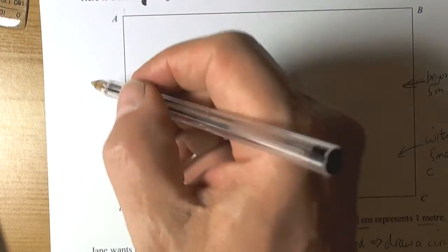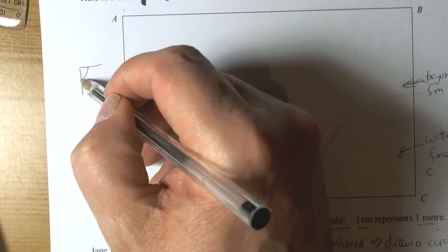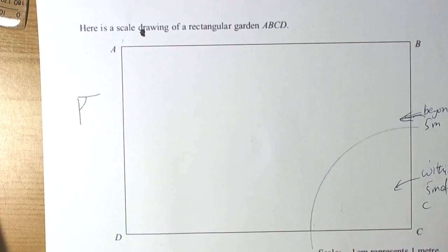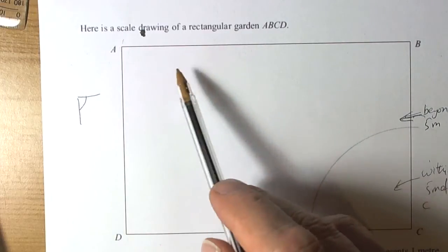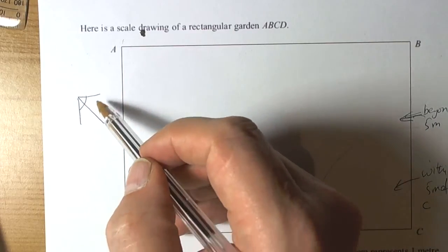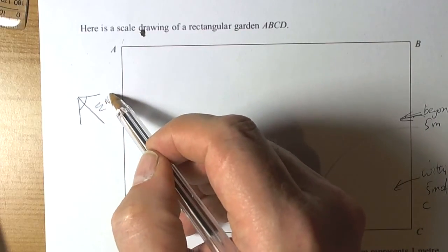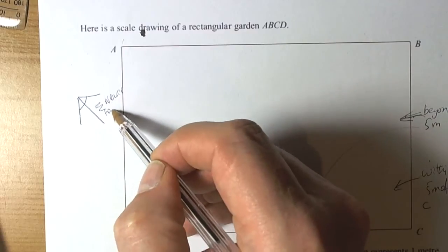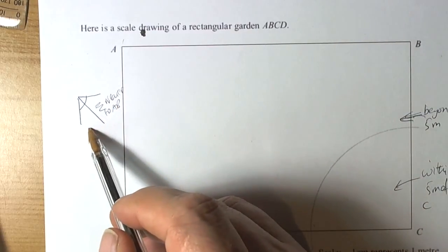We want to be nearer to one of these lines, so we need the boundary. So we need to know where that boundary is. Anything in here is nearer to AB. Anything over here is not.